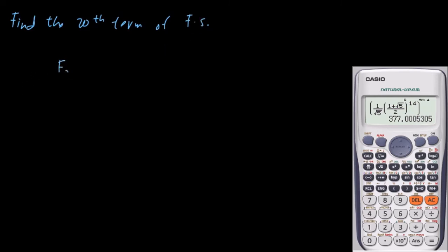So we have F20 is equal to 1 over square root of 5, 1 plus square root of 5 over 2 raised to the power of 20 because that is our n.